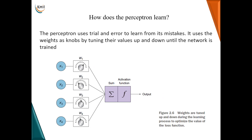How does the perceptron learn? The perceptron uses trial and error to learn from its mistakes. The weights get tuned to different values — we call it updating the weights — so that the loss function gets reduced. The weights are tuned up and down during the learning process to optimize the value of the loss function.